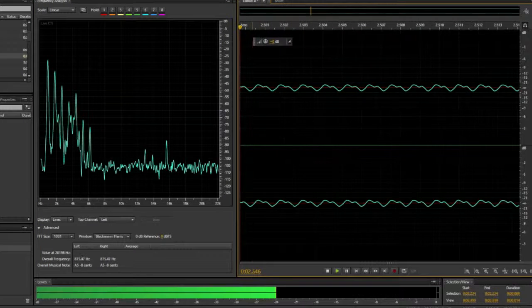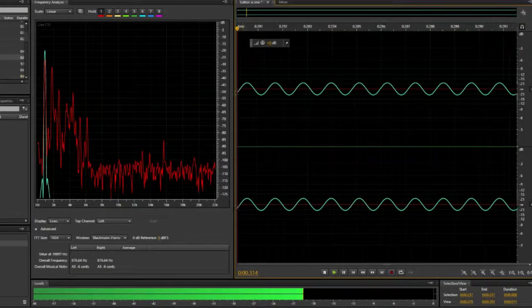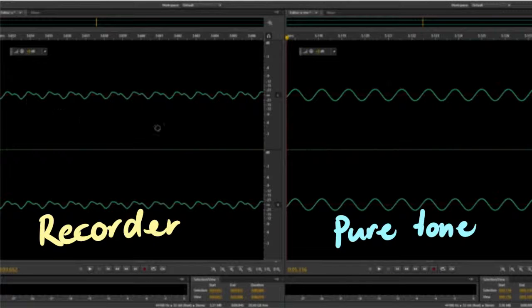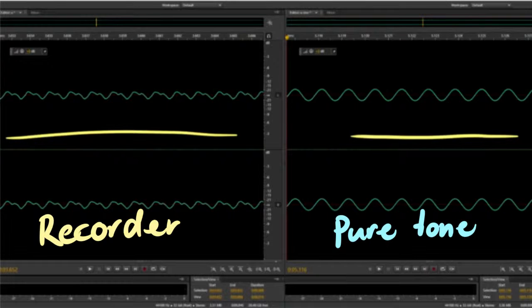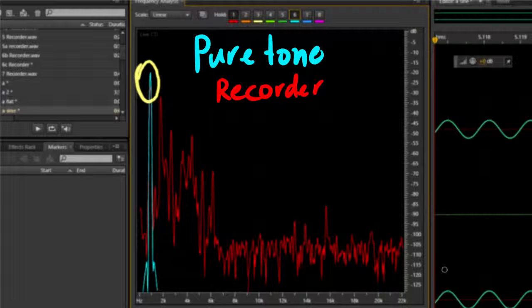Here's a recorder playing a note. Here is a pure tone at the same frequency. If we compare these two graphs, we can see that the recorder wave is not the same as the pure tone. If we analyse the component frequencies of the two, we can see that the pure tone gives one main peak, while the recorder has multiple peak frequencies occurring at the same time.